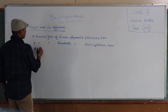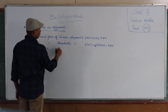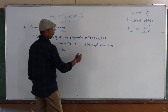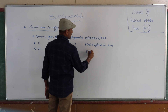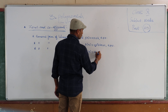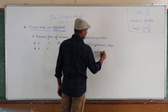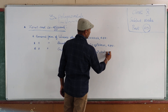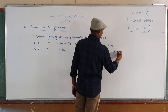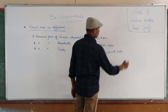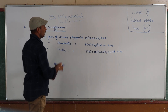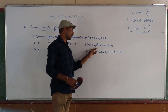Then the third one: the general form of a cubic polynomial is p(x) = ax³ + bx² + cx + d, where a ≠ 0. So these are the linear, quadratic, and cubic polynomials.